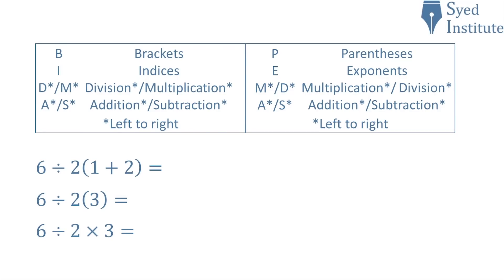Working through BIDMAS or PEMDAS, when you have operations of the same precedence you go from left to right. Same precedence means one is not more important than the other — in maths, division and multiplication have the same precedence. So going left to right: 6 divided by 2 is 3, then 3 times 3 is 9. But is this correct?